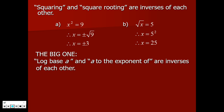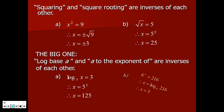Here's the big one for the day: log base a and a to the exponent of are inverses of each other. If you've got log base 5, when you move it over it becomes 5 to the power of — exactly the way add became subtract and squared became square root. And if you've got 6 to the power of x, its inverse is log base 6. So you can work it the other way, just like squared and square root. This is a brilliant, powerful move after a whole chapter of logarithms.